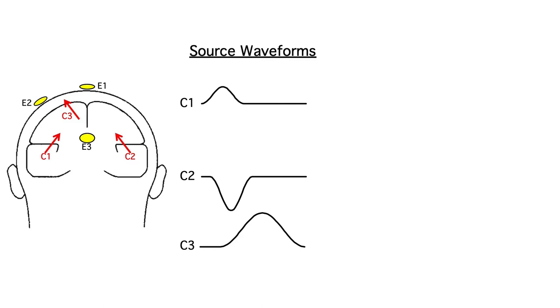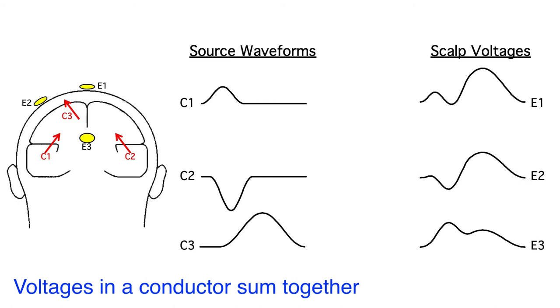Each component also has what we call a source waveform, which is the change in voltage over time in response to a given event at the source. And imagine that we have the three electrodes shown here, labeled E1, E2, and E3. To understand how the underlying components combine together in those scalp electrodes, you need to know a key fact about ERPs - voltages simply sum together in a conductor. As a result, the voltage recorded at each electrode will be a weighted sum of the underlying source waveforms.